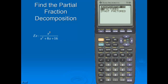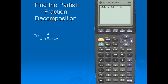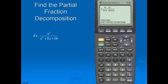Next it asks about the denominator, which appears to be not factored. It asks for the degree, which is 2. The coefficient of x squared is 1, the coefficient of x is 8, and the constant on the end is 16. I'll press enter, and we have our solution: 1 plus negative 8 divided by x plus 4, plus 16 divided by the quantity x plus 4 squared.